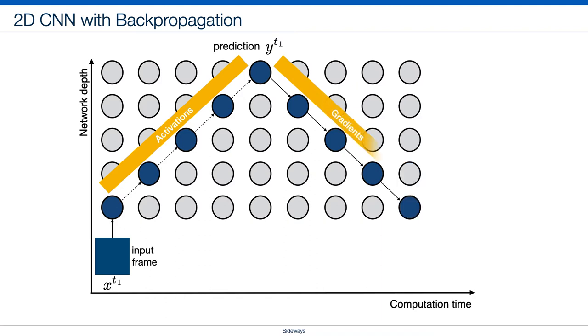Next, we compute gradients from top to bottom. Blue circles are layers with activations or gradients that originated in the blue frame.